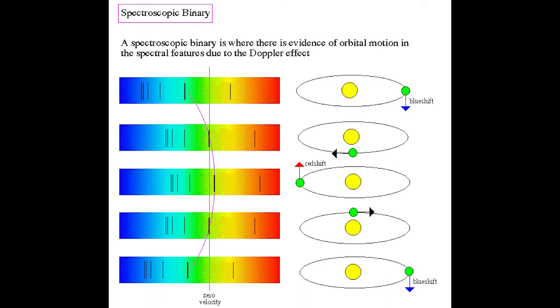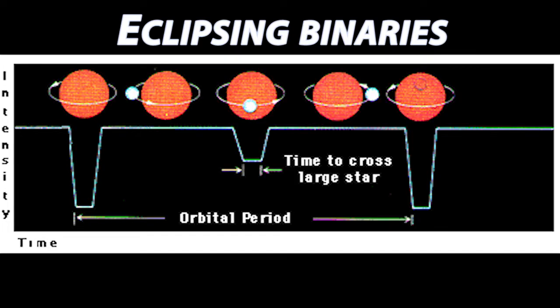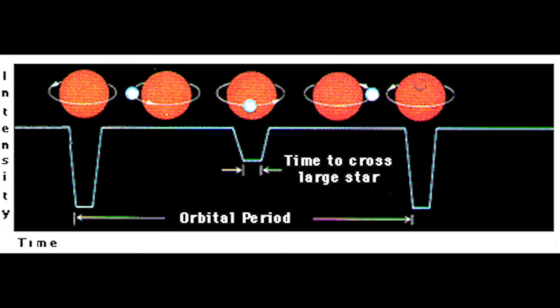Then there are eclipsing binaries. These are stars that orbit at an angle so that from Earth, when one passes in front of the other, it eclipses the star behind it, just like a lunar eclipse. This totally depends upon the angle that these stars are orbiting relative to the Earth.